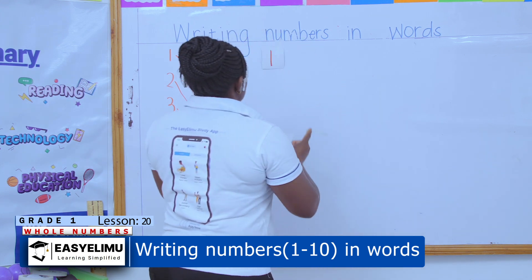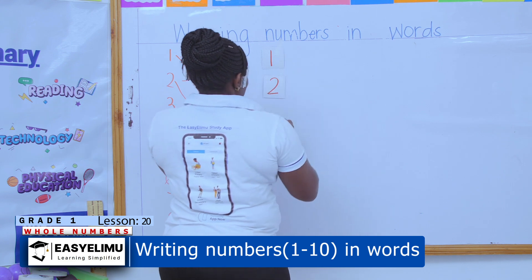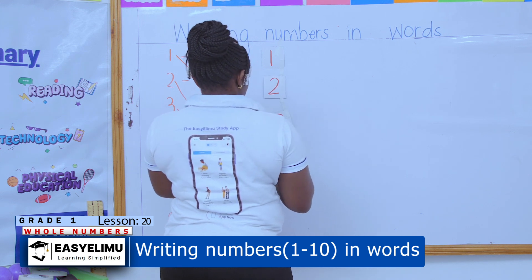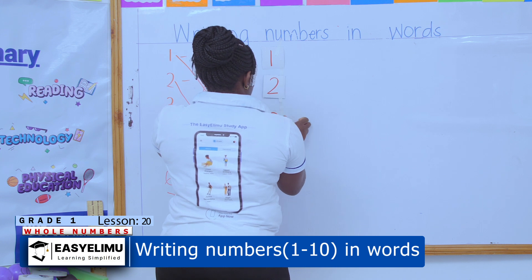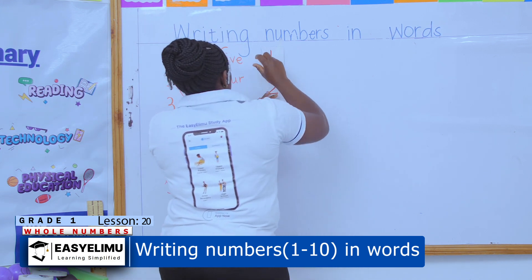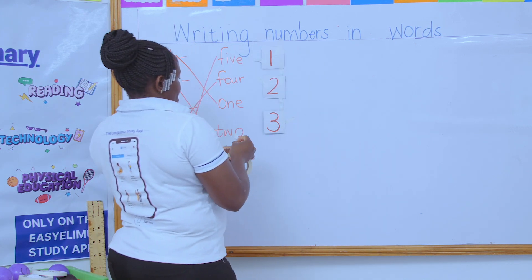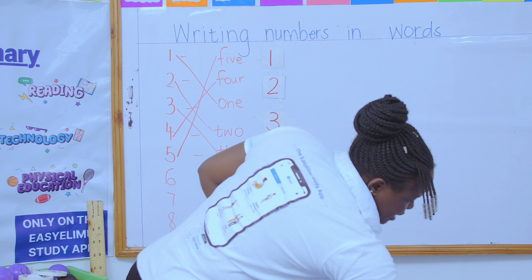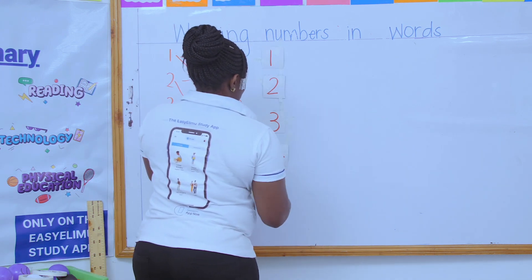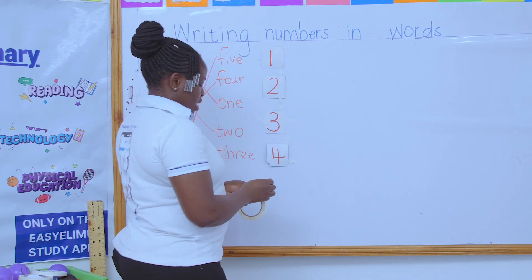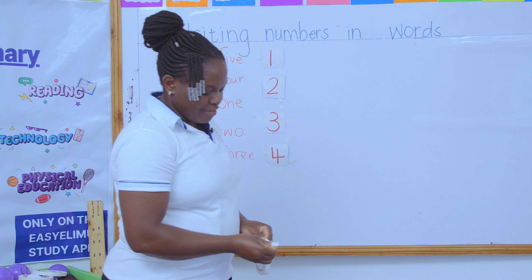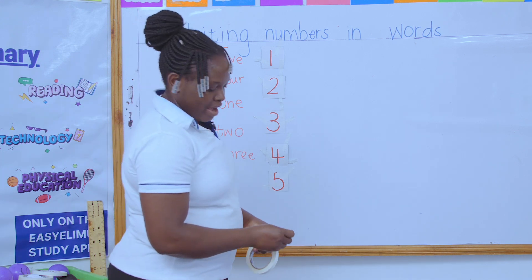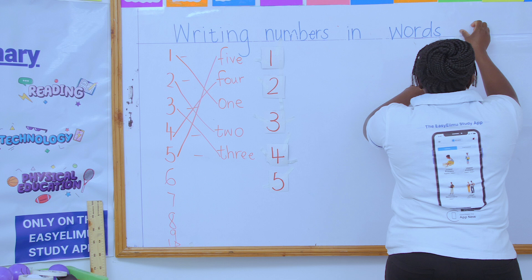We're going to play a game where you come and attach the name next to the figure. For example, if I put up the number two, I want to see the word 'two' placed next to it. When I call your name, you come and put the name next to the number. The team that does it very fast will have a smiley face!